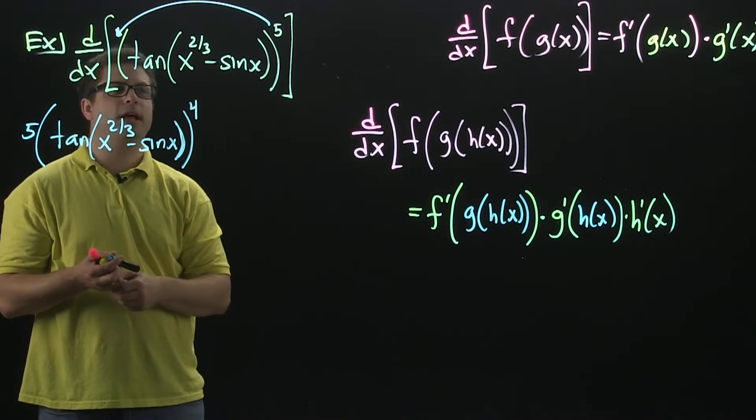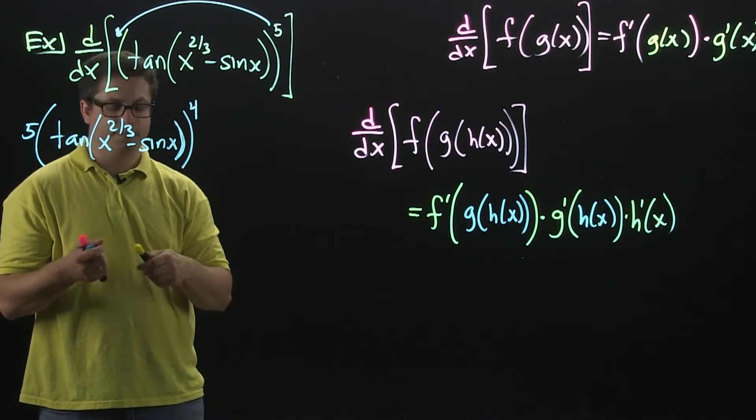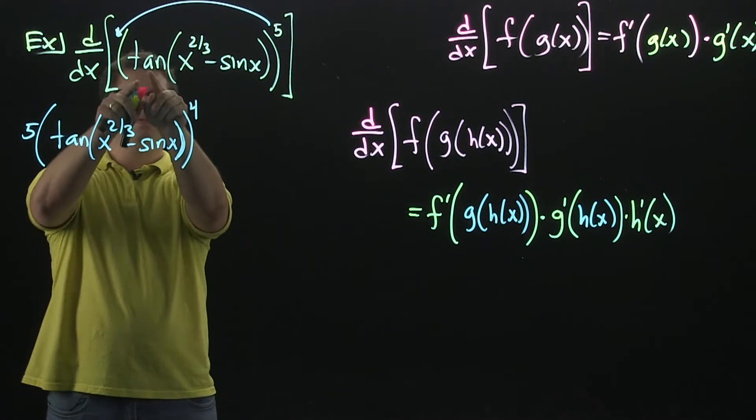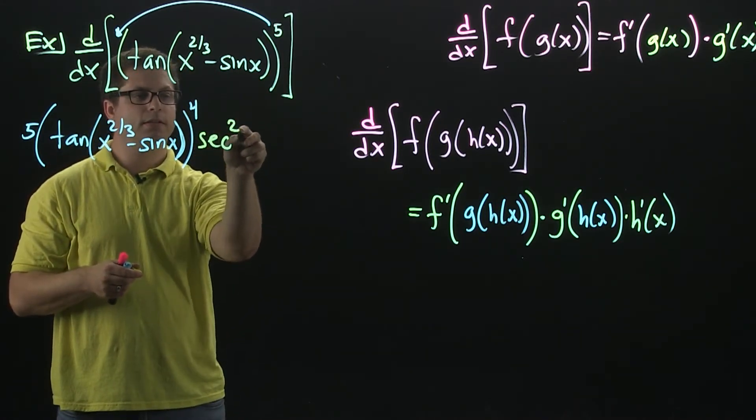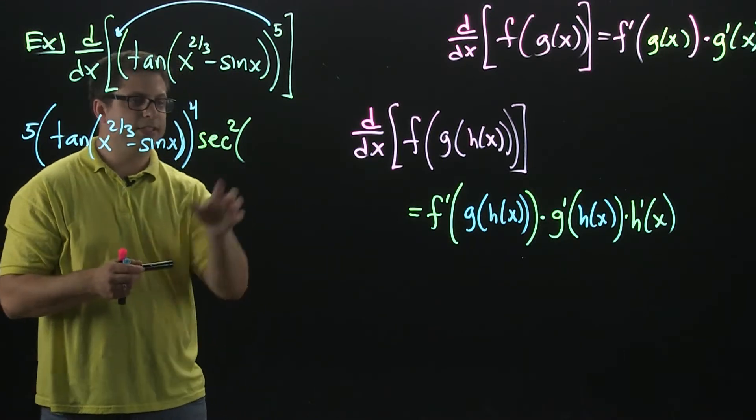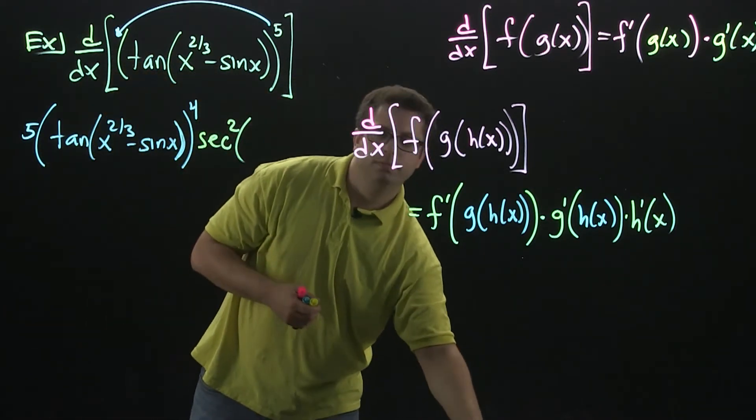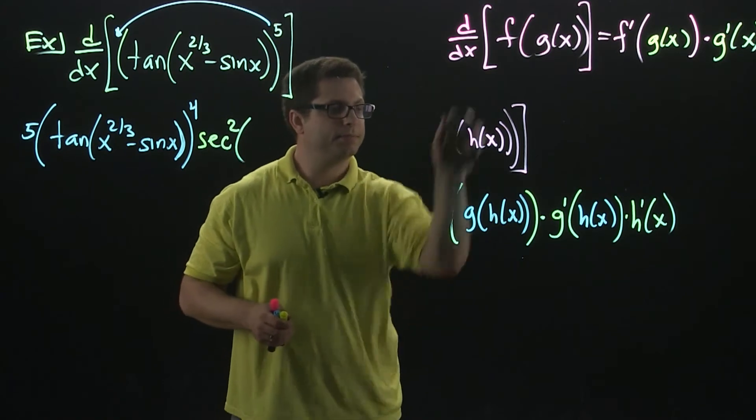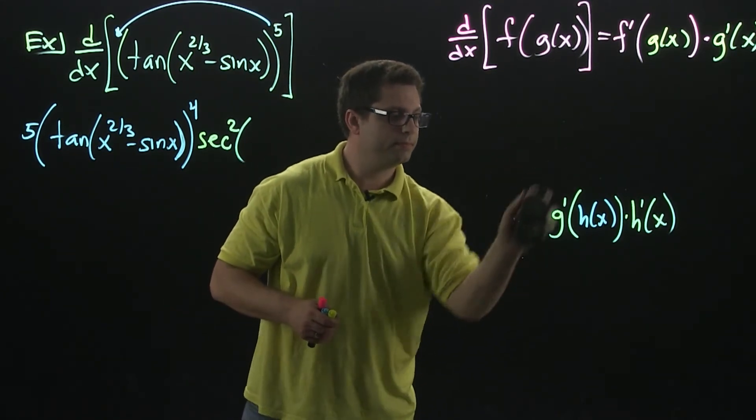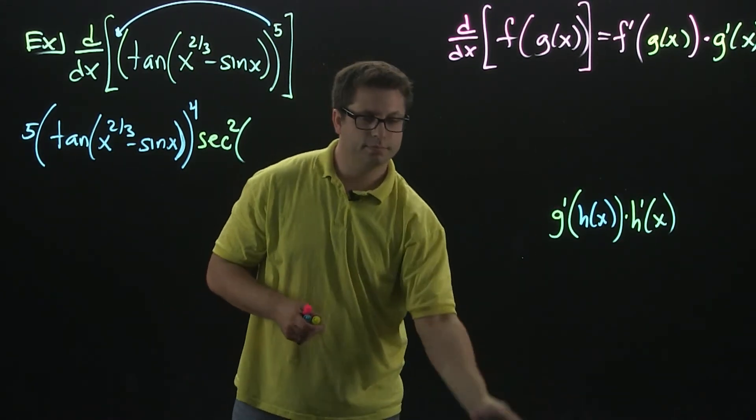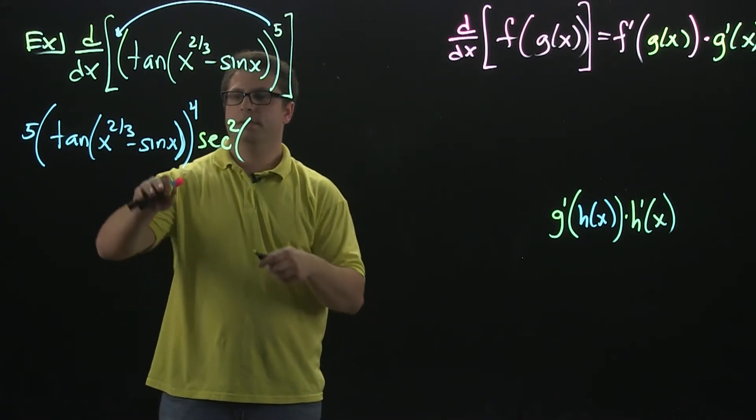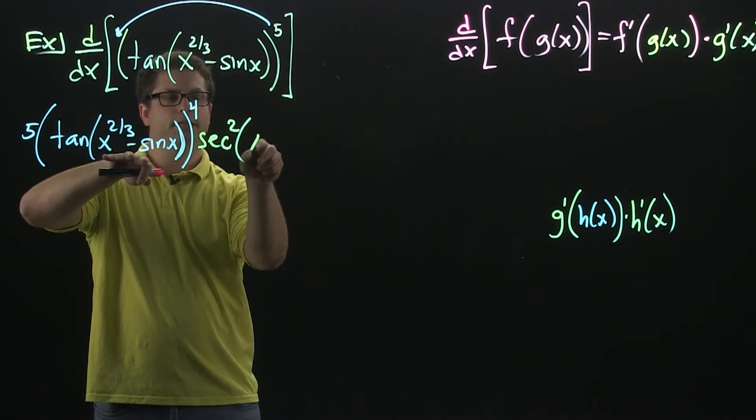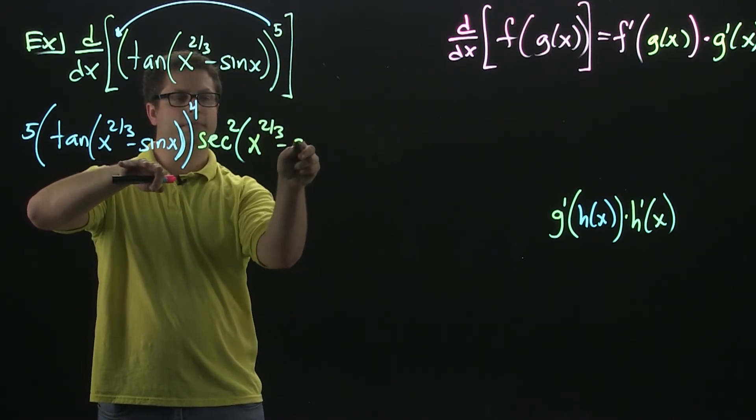You are then going to multiply by the derivative of the inside. So the derivative of tangent is secant squared, and then you're going to leave its inside alone. Because I'm going to run out of room, I'm going to have to erase this. So the inside of secant squared is x to the two-thirds minus sine.